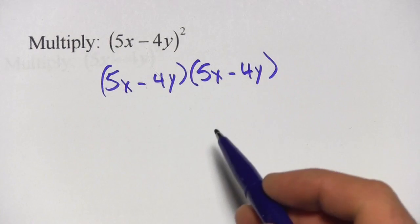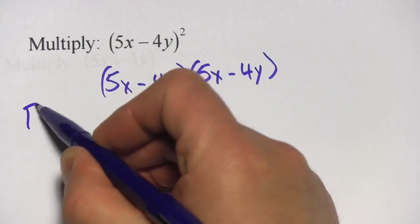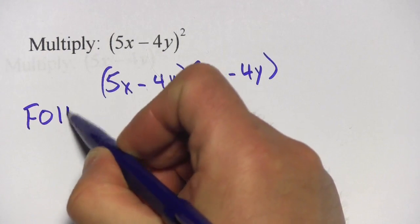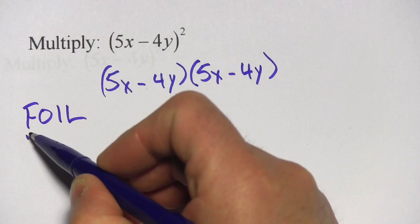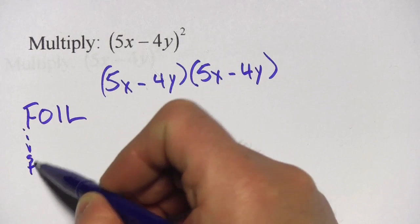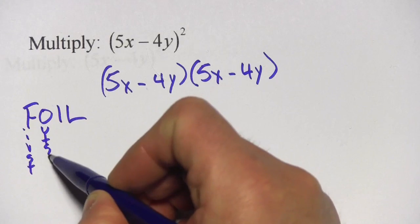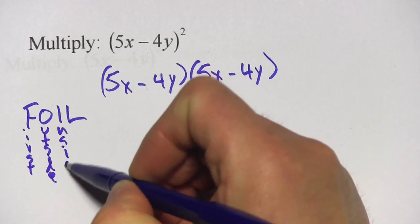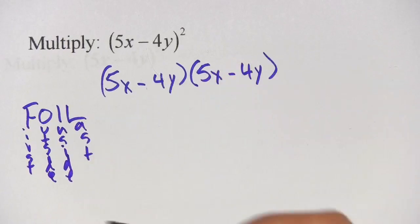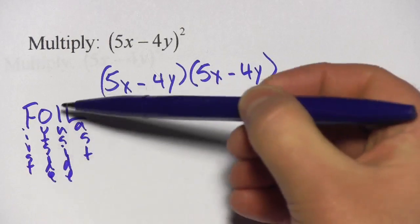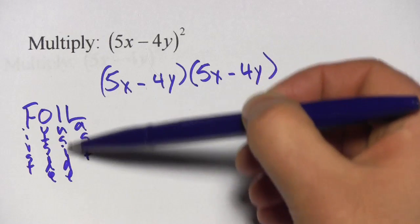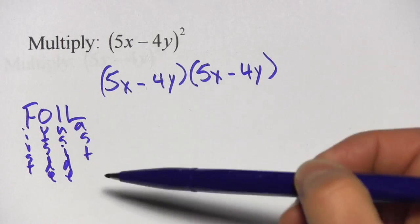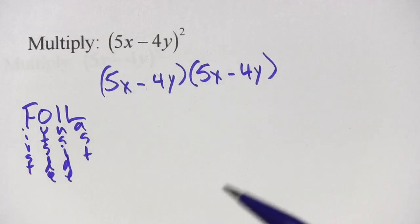Now to multiply, we are going to use something called FOIL. And FOIL stands for first, outside, inside and last. And what it means is we multiply the first terms, then the outside terms, then the inside terms and then the last terms. And then we add everything together.